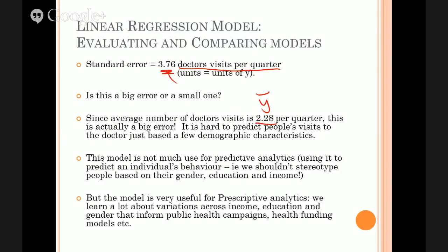The key point here is when asking is this a big error or not, answer that question relative to the mean of y. If it's kind of big compared to the mean of y, you've got a big error. If on the other hand, y in this example was typically around 100, then to only get an error of 3.76 would be quite good. But when the average of y is only 2.28, that's a pretty lousy error. It's actually really difficult with these few basic characteristics to predict how many times people go to the doctor. Not surprising.